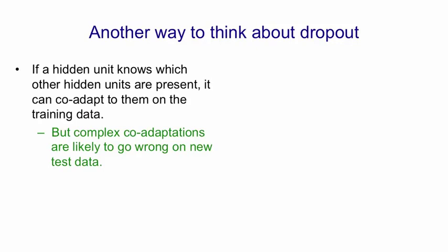Now that's going to cause complex co-adaptations between the hidden units, and these are likely to go wrong when there's a change in the data. So on new test data, if you're relying on a complex co-adaptation to get things right on the training data, it's quite likely to not work nearly so well on new test data. It's like the idea that a big complex conspiracy involving lots of people is almost certain to go wrong because there's always things you didn't think of. And if there's a large number of people involved, one of them will behave in an unexpected way and then the others will be doing the wrong thing.